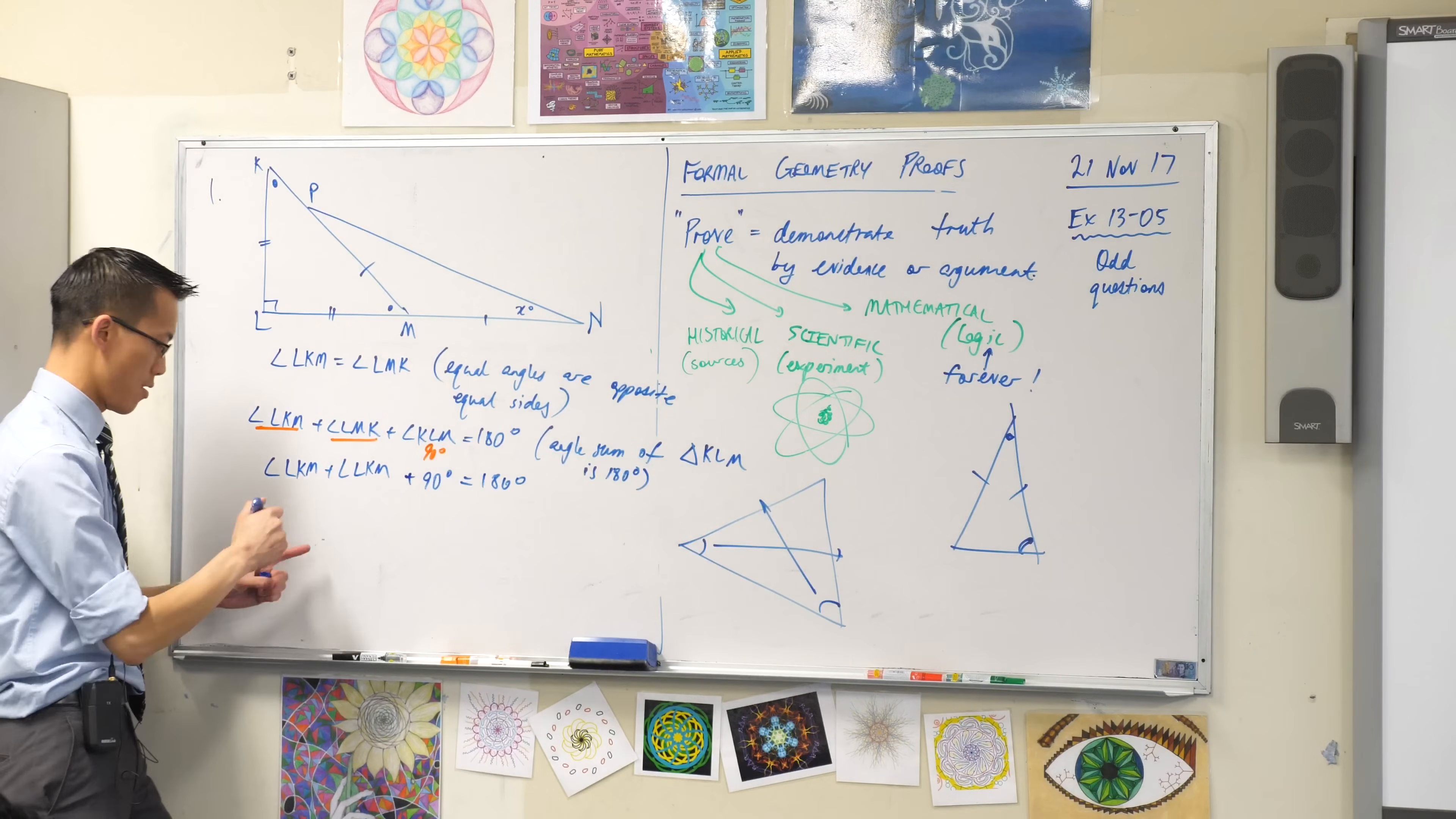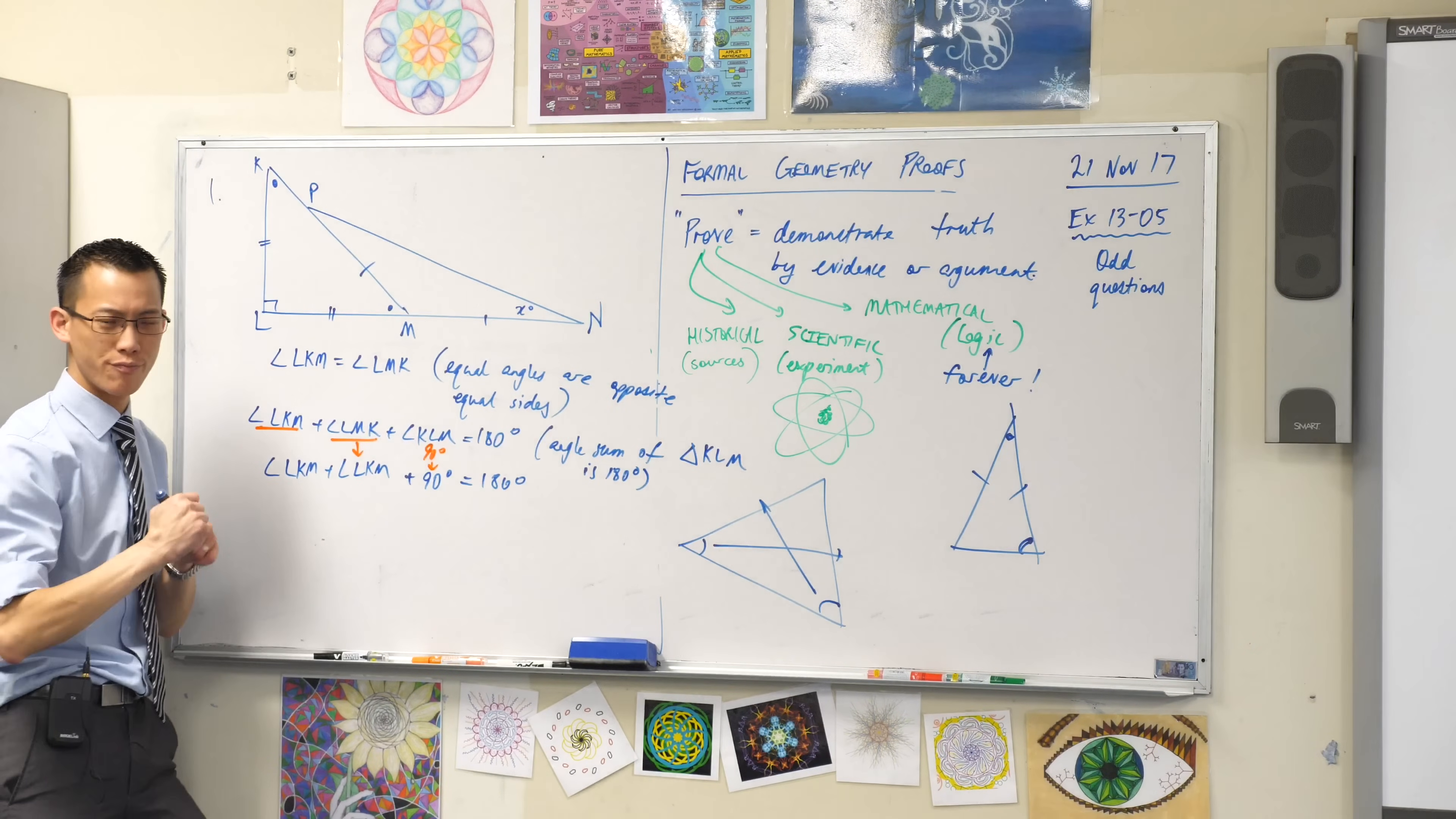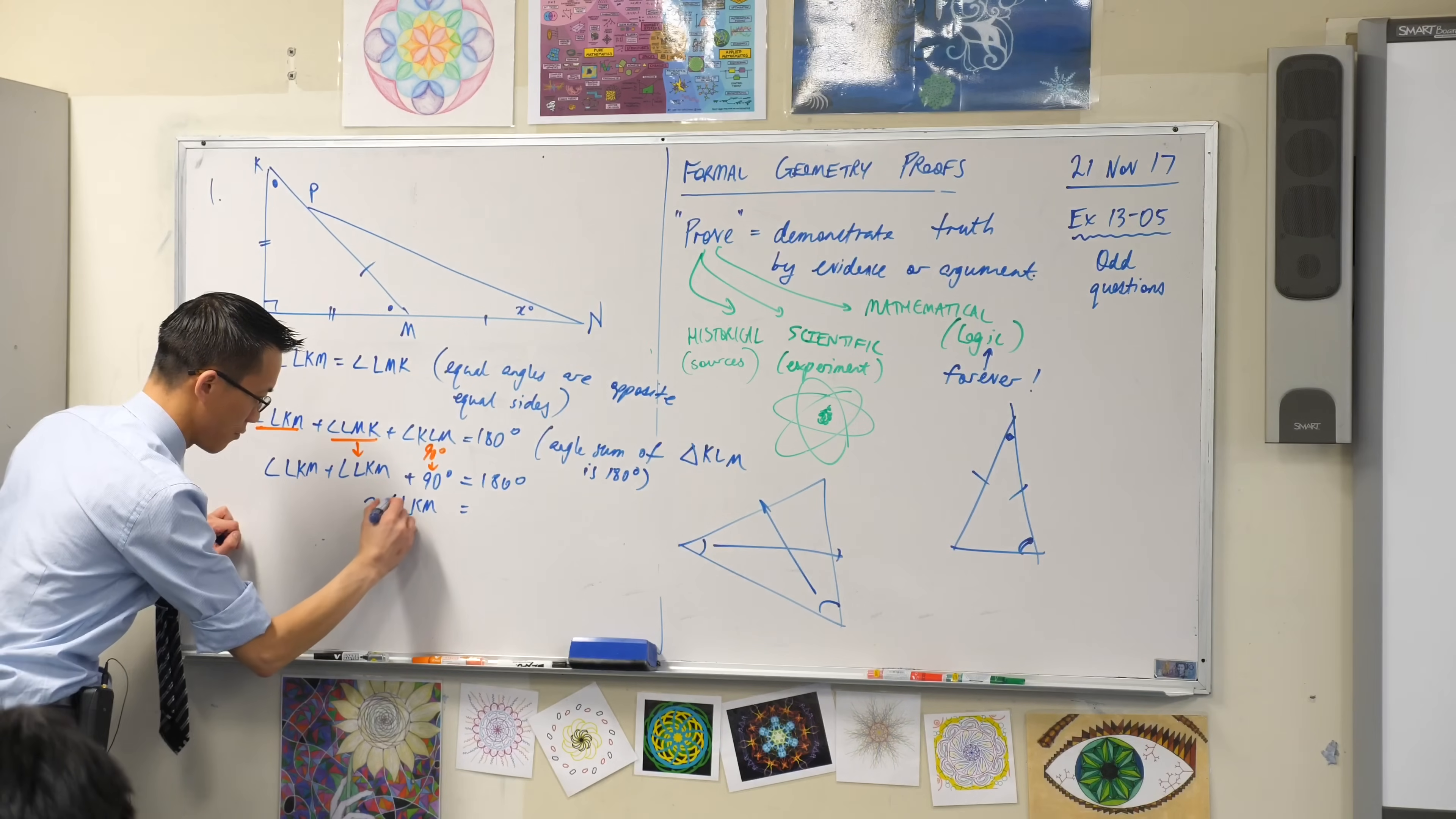So I've just done a substitution from this into this and this into this. So how many LKMs do I have on the left-hand side? Two of them. Two lots of LKM. That's an angle sign, not a great angle sign, I'll give you that angle sign.